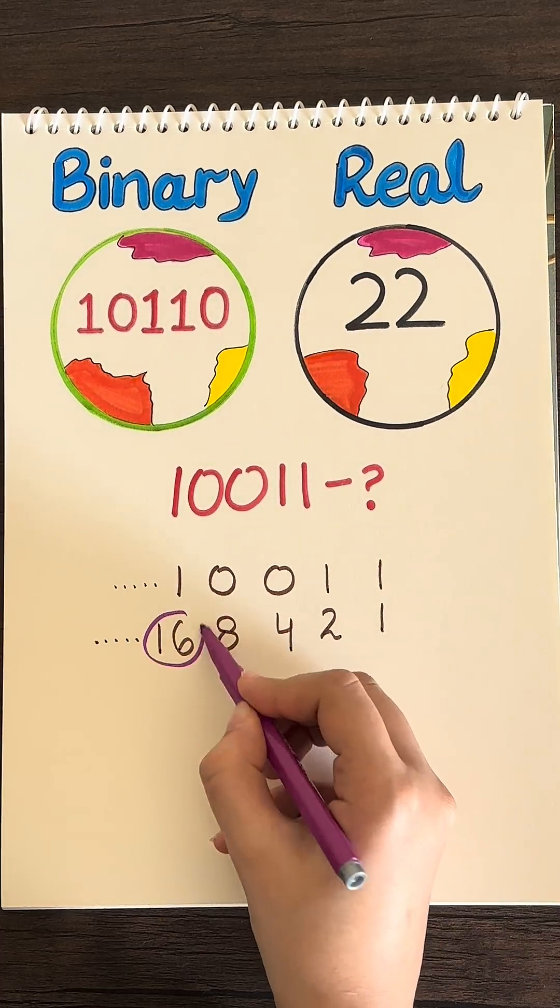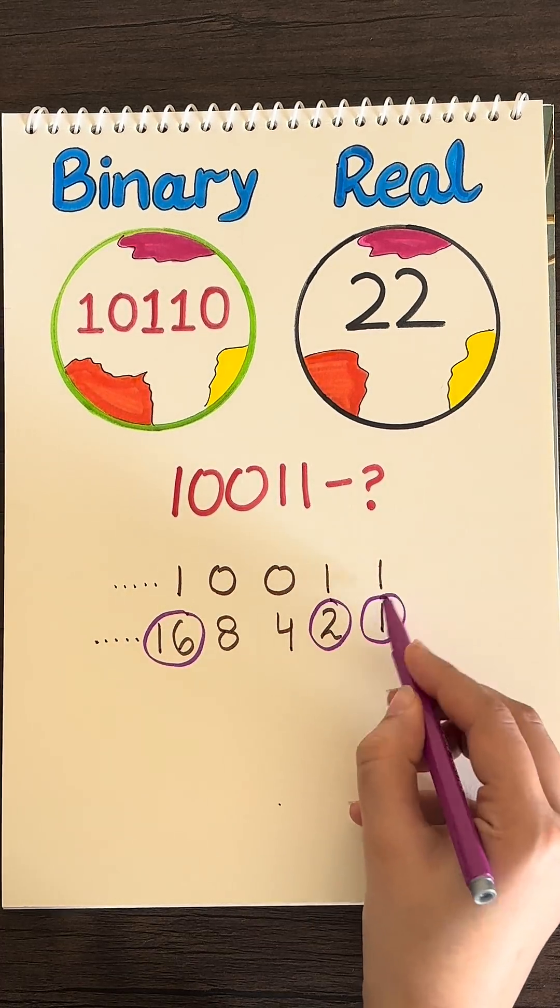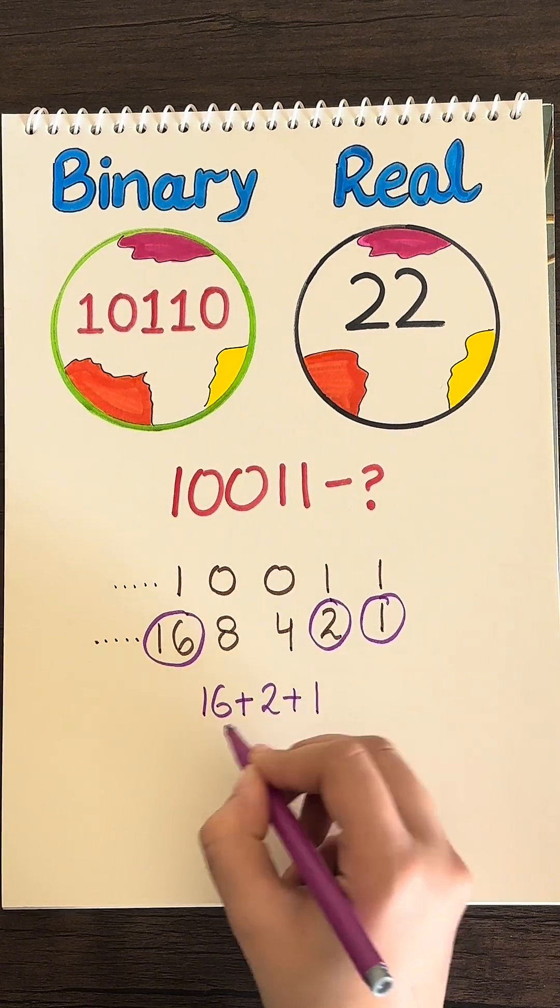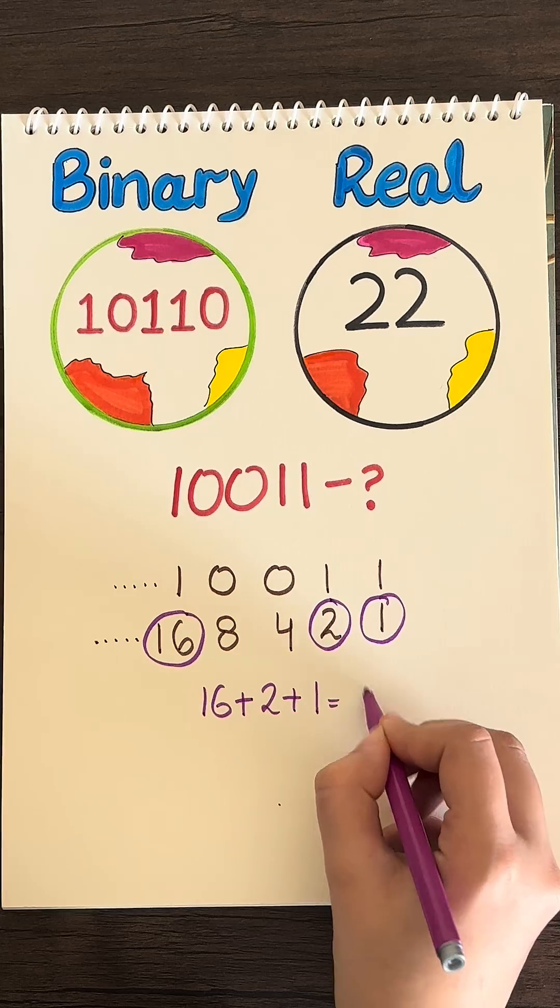Now let's circle the bottom numbers anywhere there's a 1 above them. So 16, 2, and 1, now adding up all the circled numbers. We get 16 plus 2 plus 1, and that is equal to 19.